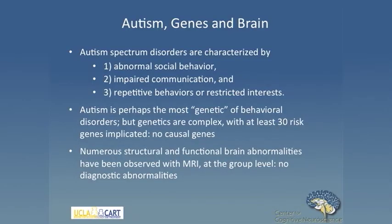Today I'm going to be talking about research we're doing at UCLA primarily in autism, primarily in imaging and genetics. I don't really need to tell you very much about autism and autism spectrum disorders, so I'll skip over the general intro. But what I do like to add is that autism is, as you probably know, among the most genetic of complex behavioral disorders.